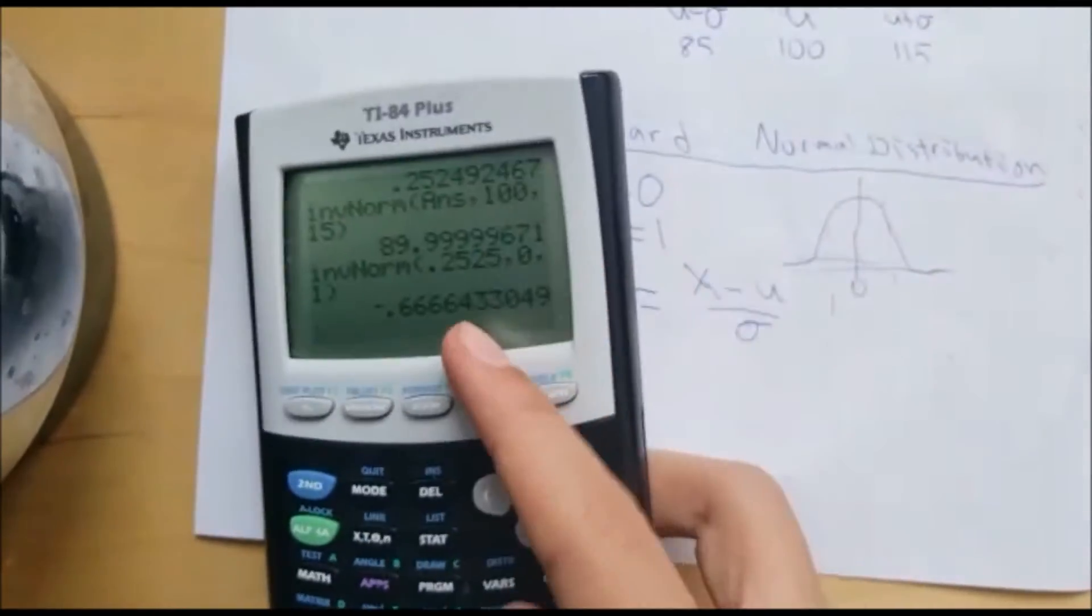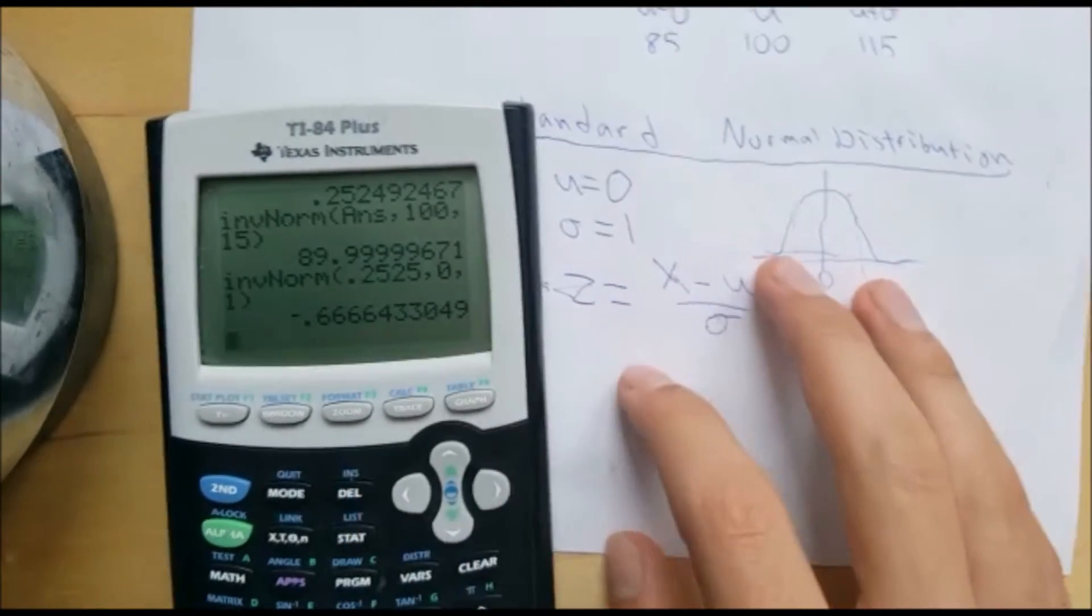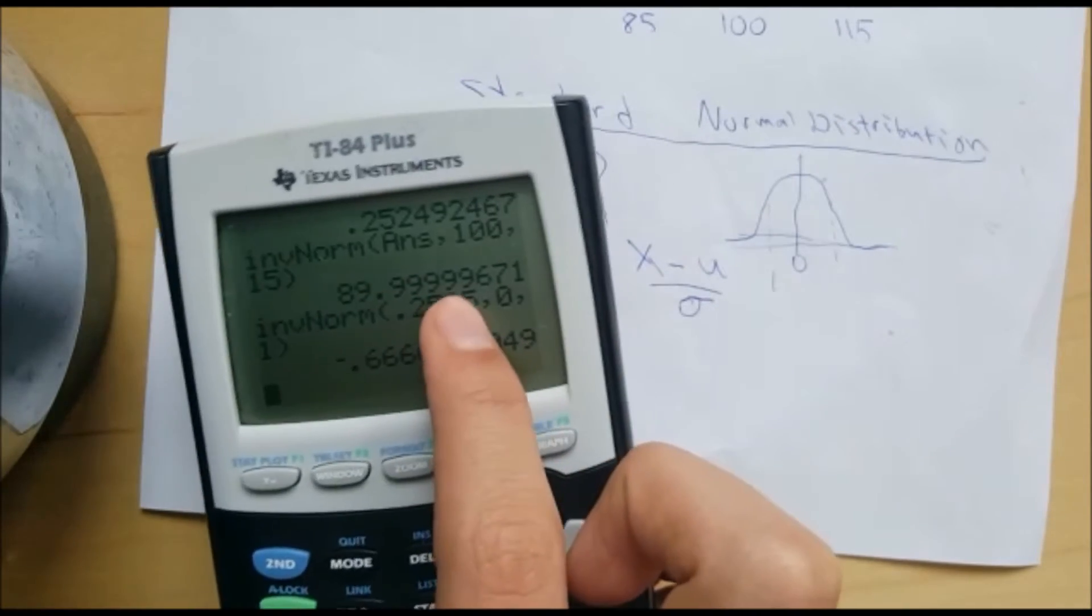Now the value, now this is the Z, this is the Z value. This is the value for which the probability is this much.